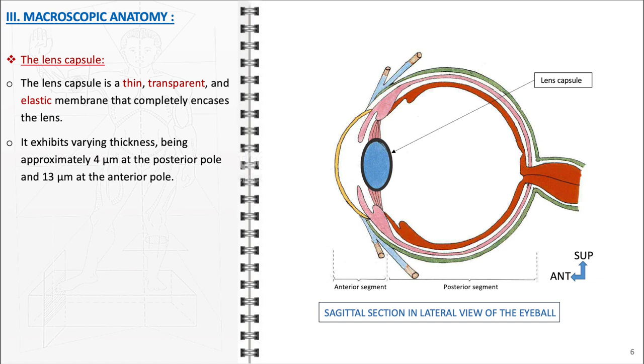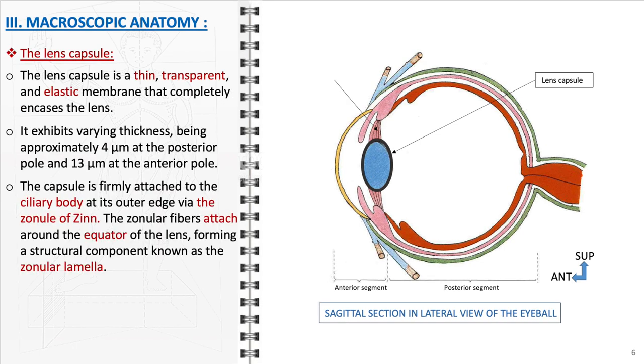The capsule is firmly anchored to the ciliary body at its periphery through the zonule of Zinn. This anchoring is crucial for maintaining the lens's position in the eye. The zonular fibers attach around the equator of the lens, forming the zonular lamella, a structural component that supports the lens and facilitates its movements during accommodation.